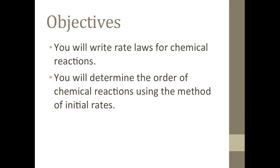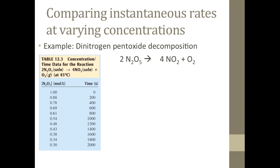One way you will learn to do this is called the initial rate method. Let us start with an example: the decomposition of dinitrogen pentoxide into nitrogen dioxide and oxygen.